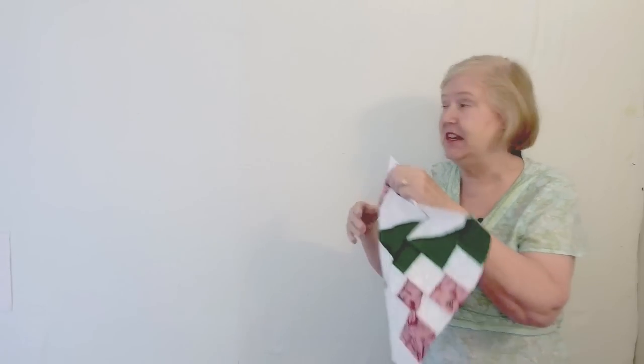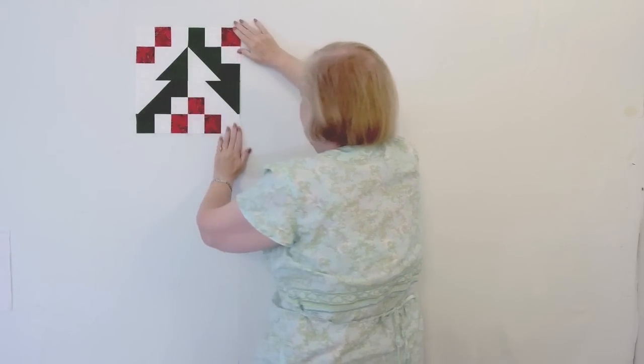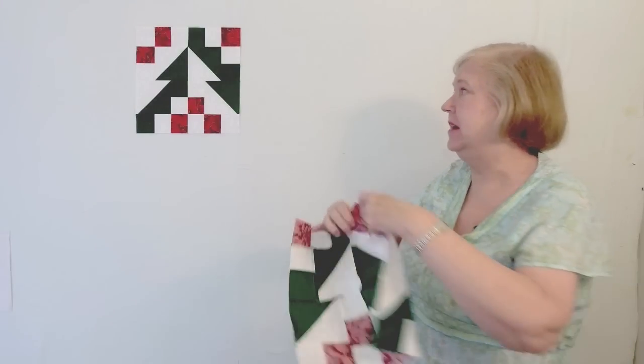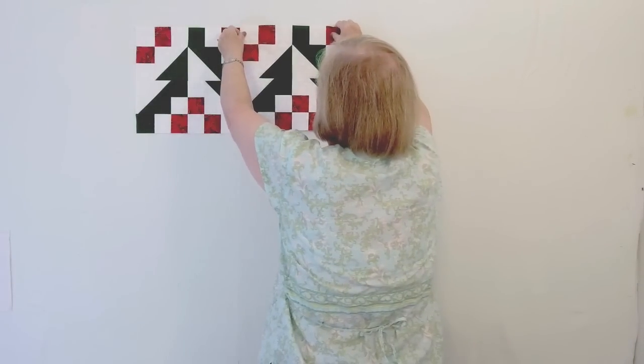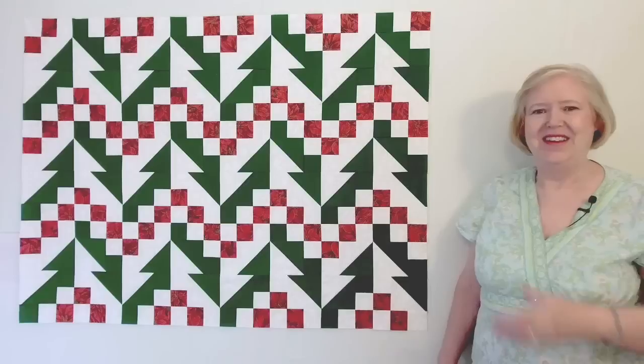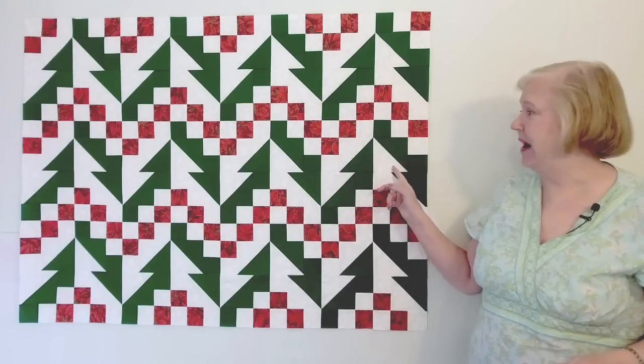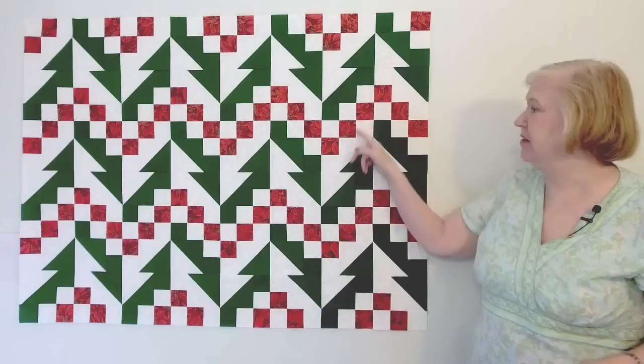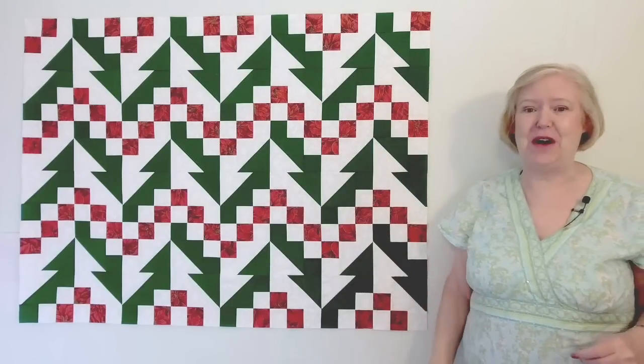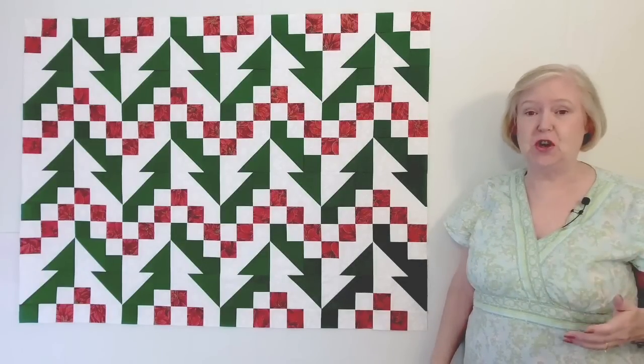Once you get all of number two blocks done, it goes together just as easily as the other layout. We just put them together just the way we made them. Put them all up and they look like this. This is my favorite layout. I love how the trees are half green and half white. And I really like how these red squares just go in a beautiful wave up and down.